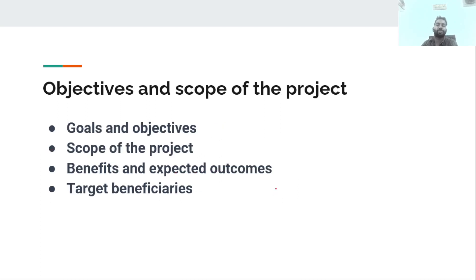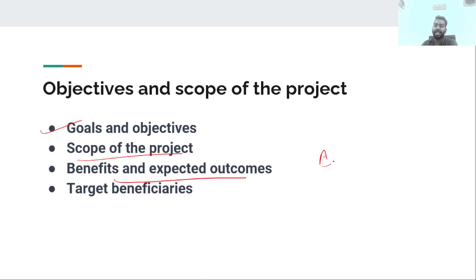For objectives and scope of the project, we have to decide the goals and objectives, and we need to identify the benefits and expected outcomes. If we develop this project, what are the expected outcomes?